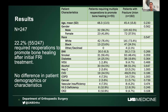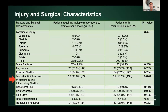This slide shows our demographics and patient characteristics, demonstrating no difference between our groups. When looking at injury and surgical characteristics — including fracture location, whether the fracture was open, and polytrauma status — the only significant finding was that patients who went on to have persistent non-union had more use of topical antibiotics compared to patients who did go on to heal after the fracture-related infection.